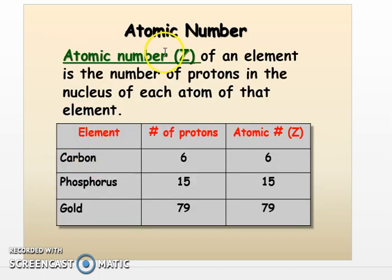So on the periodic table there are two pieces of information we can get. We have the atomic number. Capital Z is just a symbol to represent that. But the atomic number tells us really two things: the number of protons in the nucleus and also the number of electrons.